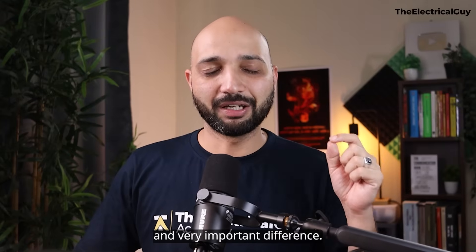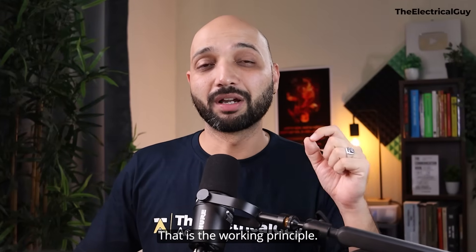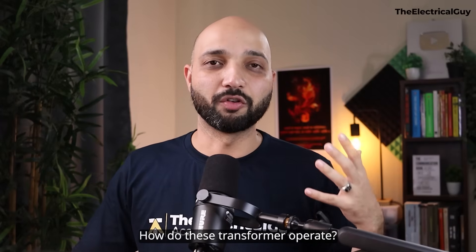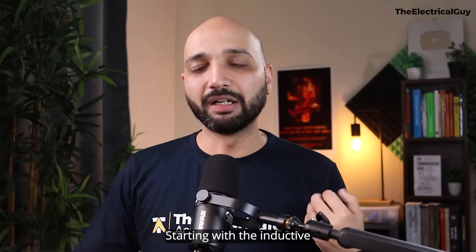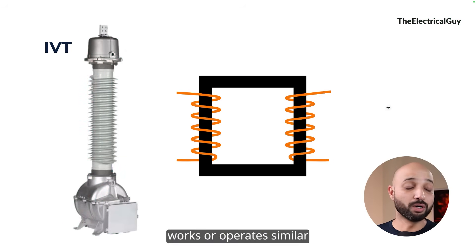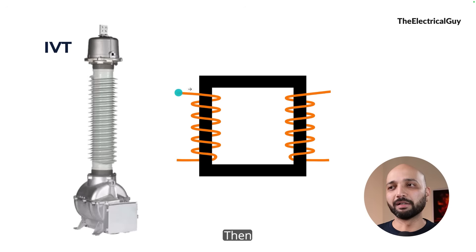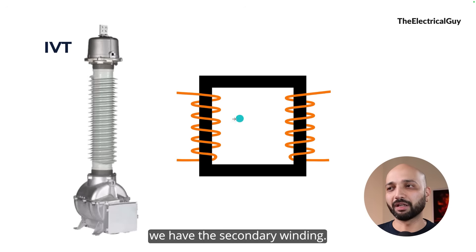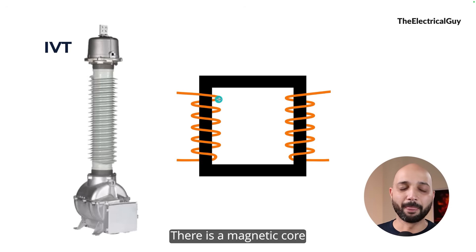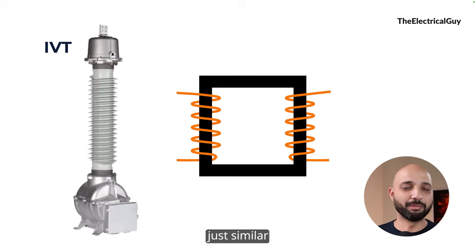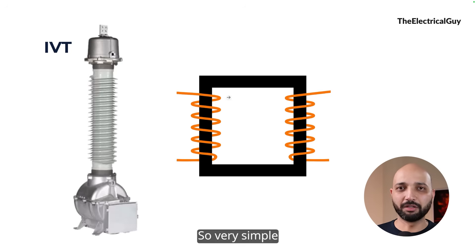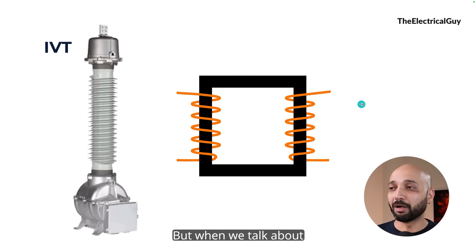Let's start with the first and very important difference: the working principle — how do these transformers operate? Starting with the inductive voltage transformer, the IVT works similarly to the power transformer. We have the primary winding, the secondary winding, and a magnetic core, and it operates just like the regular transformer that we know.